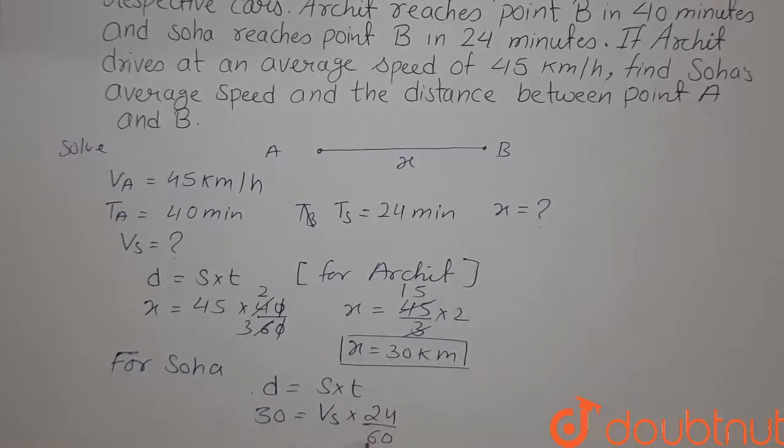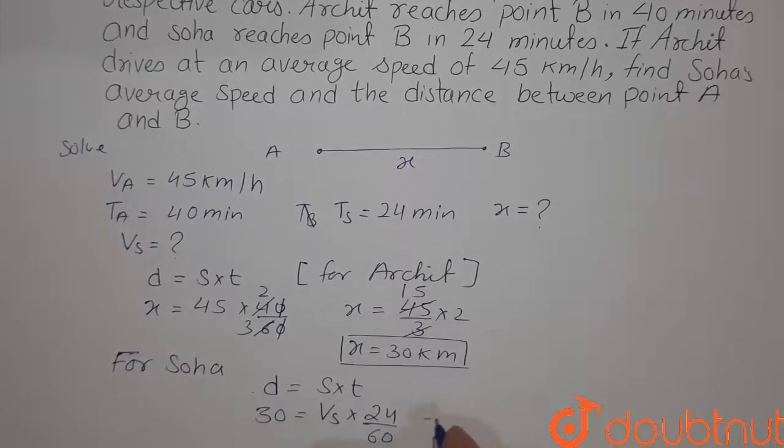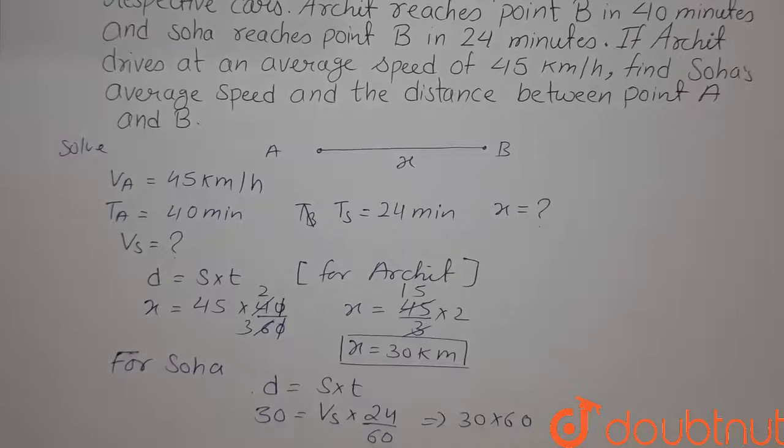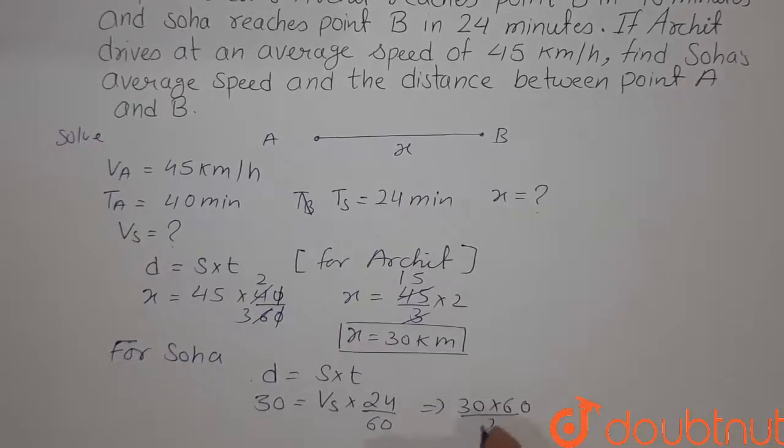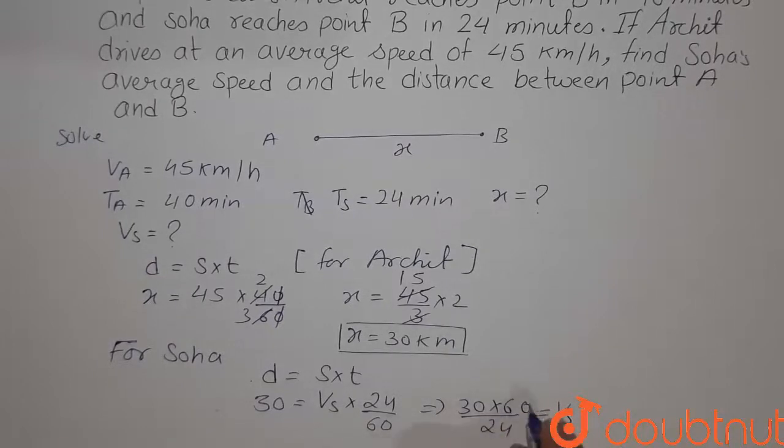We cross multiply and get 30 into 60 upon 24 equals VS. That is the average speed of Soha. Canceling it out, this will cancel with 6, so we get 4 times and here we get 10 times.